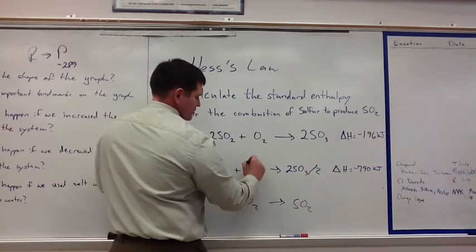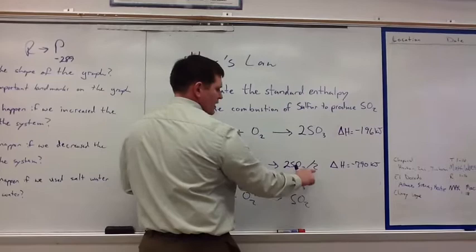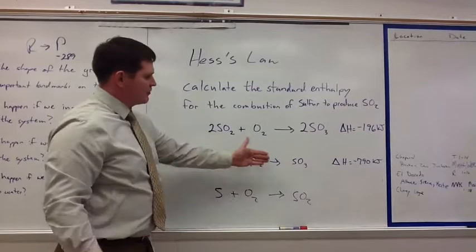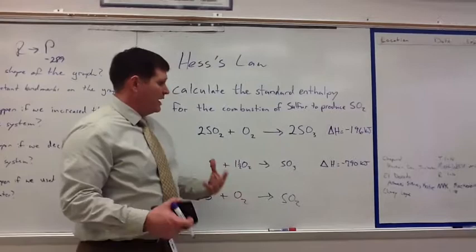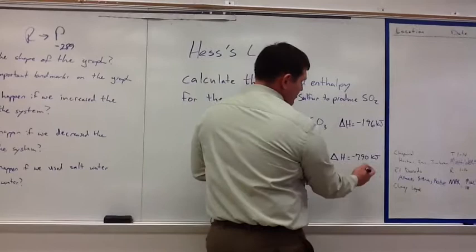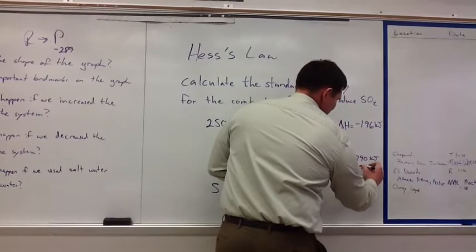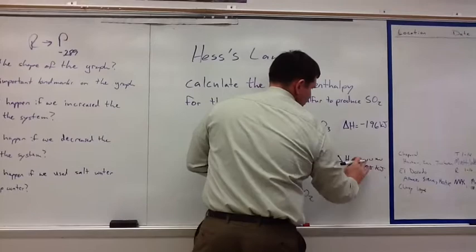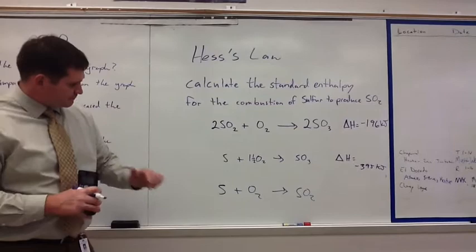We're going to divide everything by two. So that's going to leave this as just S. This is going to go from 3O2 to 1.5. This is going to go from two SO3s into just SO3. Now how's that going to change my enthalpy? My enthalpy is also going to be halved. So I'm going to take 790, which is a negative number, and divide that by two, which gives me negative 395 kilojoules.